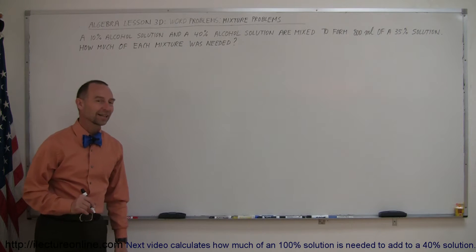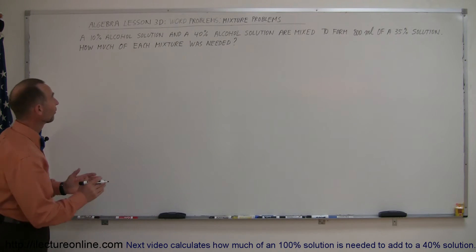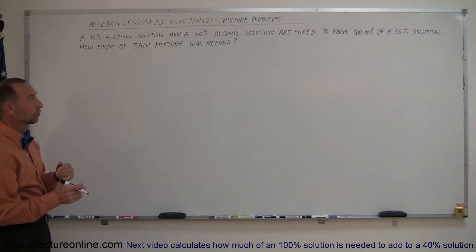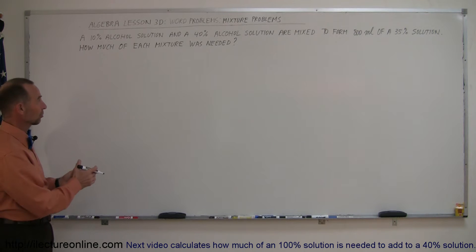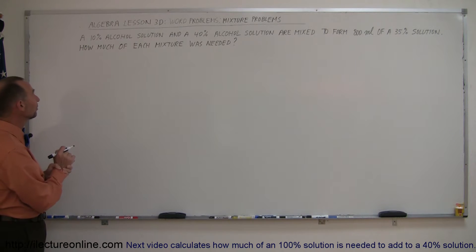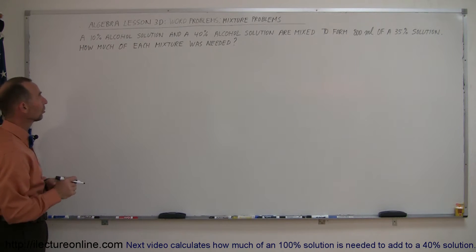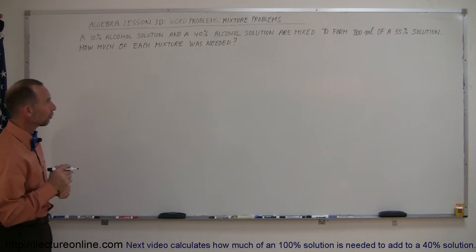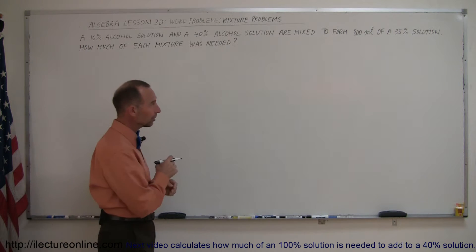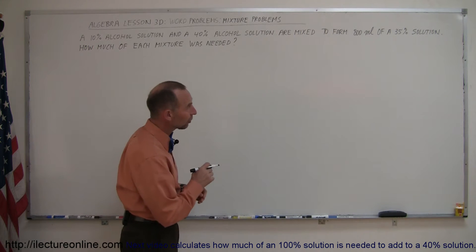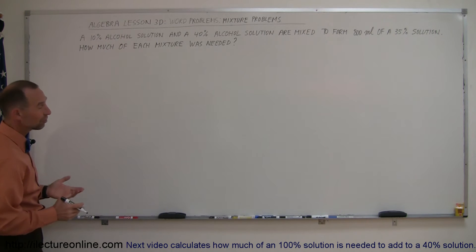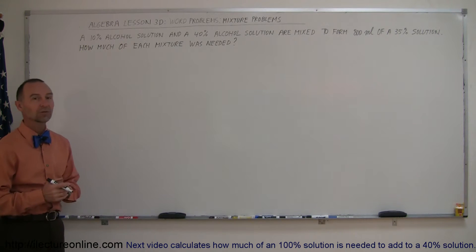Welcome to iLectra Online, here's lesson 3D on word problems. We're going to be dealing with mixture problems. Number one: a 10% alcohol solution and a 40% alcohol solution are mixed to form 800 milliliters of a 35% solution. How much of each mixture was needed?